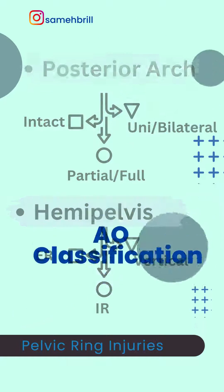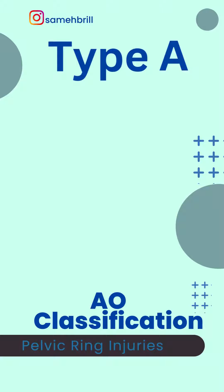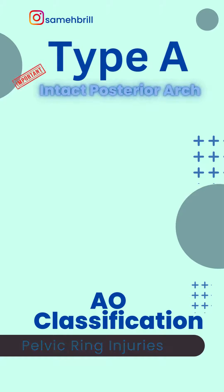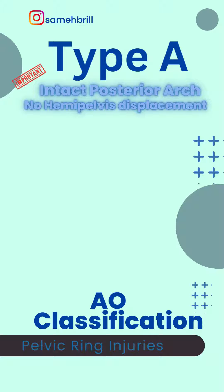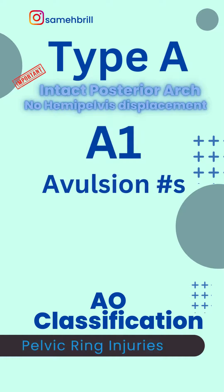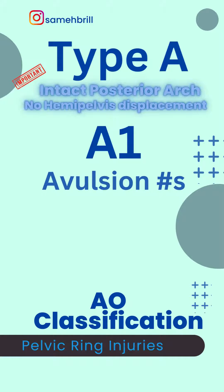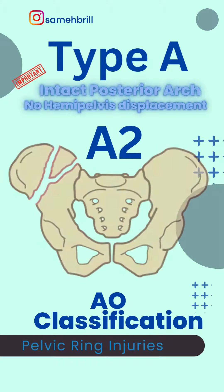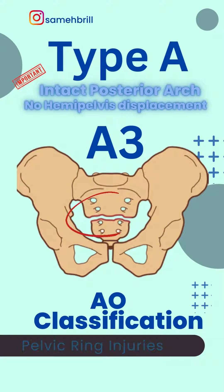Type A fractures are stable fractures; therefore they have an intact posterior arch and no hemipelvis displacement. That includes A1, avulsion fractures; A2, direct blows; and A3, transverse sacral fractures.